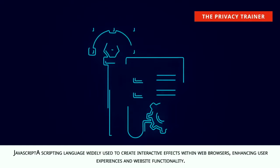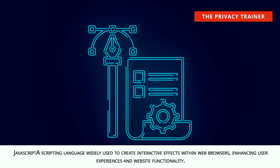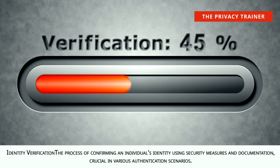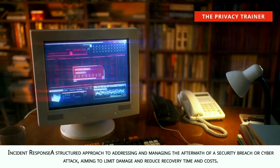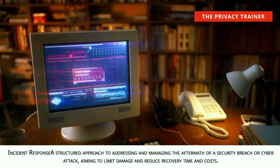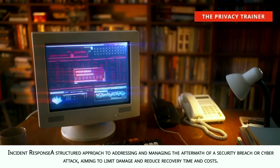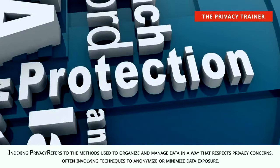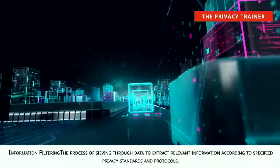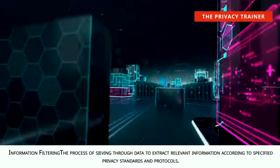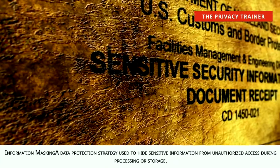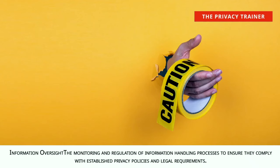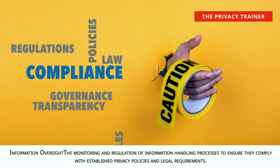IT architecture. The structured framework within an organization that aligns IT strategies and technologies with business strategies, ensuring efficient technology use across the enterprise. IT department. The division within an organization responsible for managing and maintaining information technology systems and services. JavaScript. A scripting language widely used to create interactive effects within web browsers, enhancing user experiences and website functionality. Identity verification. The process of confirming an individual's identity using security measures and documentation, crucial in various authentication scenarios. Incident response. A structured approach to addressing and managing the aftermath of a security breach or cyber attack, aiming to limit damage and reduce recovery time and costs. Indexing privacy. Refers to the methods used to organize and manage data in a way that respects privacy concerns, often involving techniques to anonymize or minimize data exposure. Information filtering. The process of sieving through data to extract relevant information according to specified privacy standards and protocols.